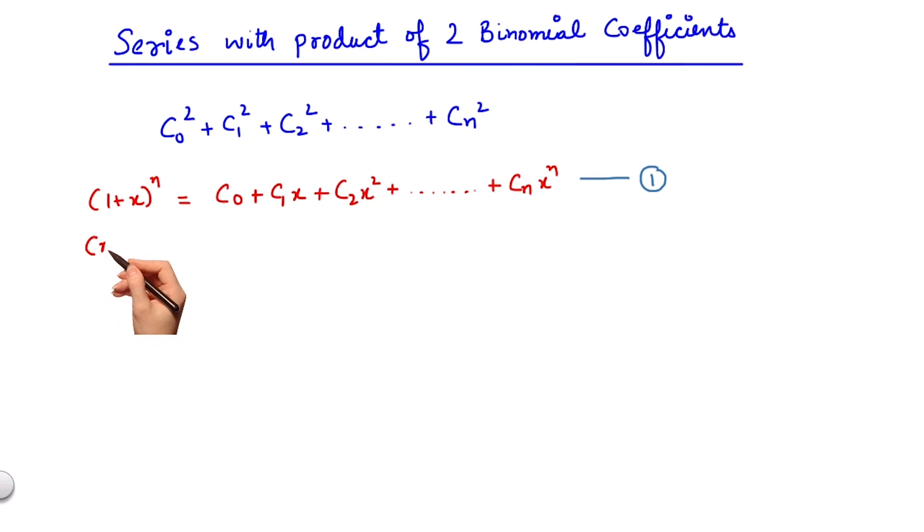We can also write this expansion as x plus 1 whole to the power n equals c0 x to the power n plus c1 x to the power n minus 1 plus c2 x to the power n minus 2 until cn x to the power 0.